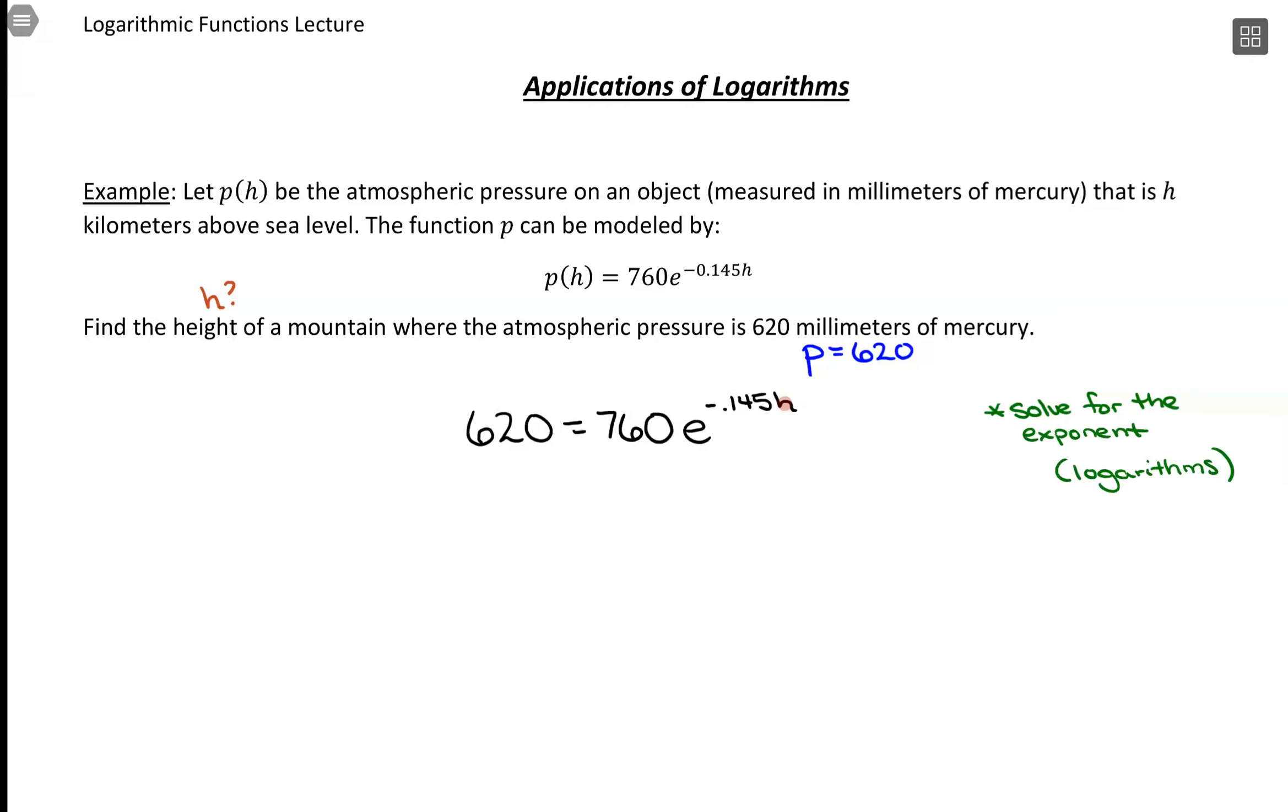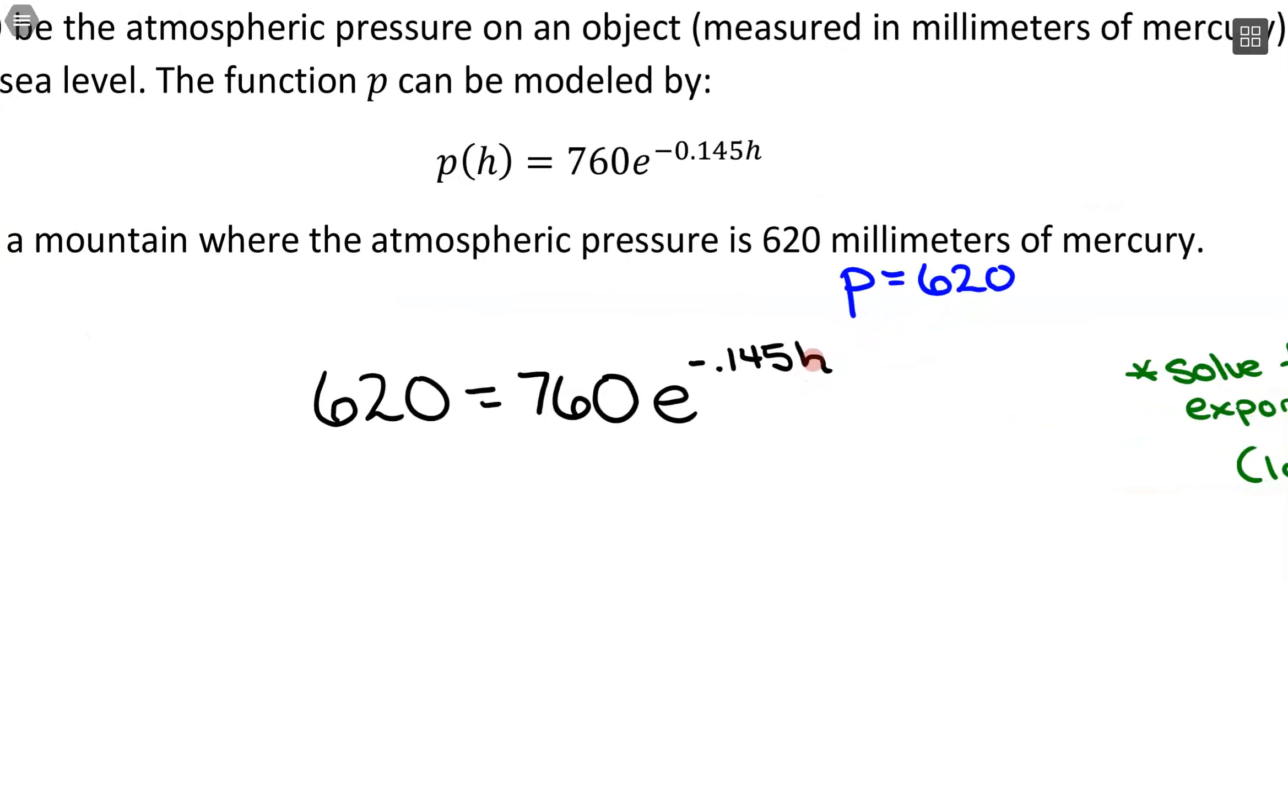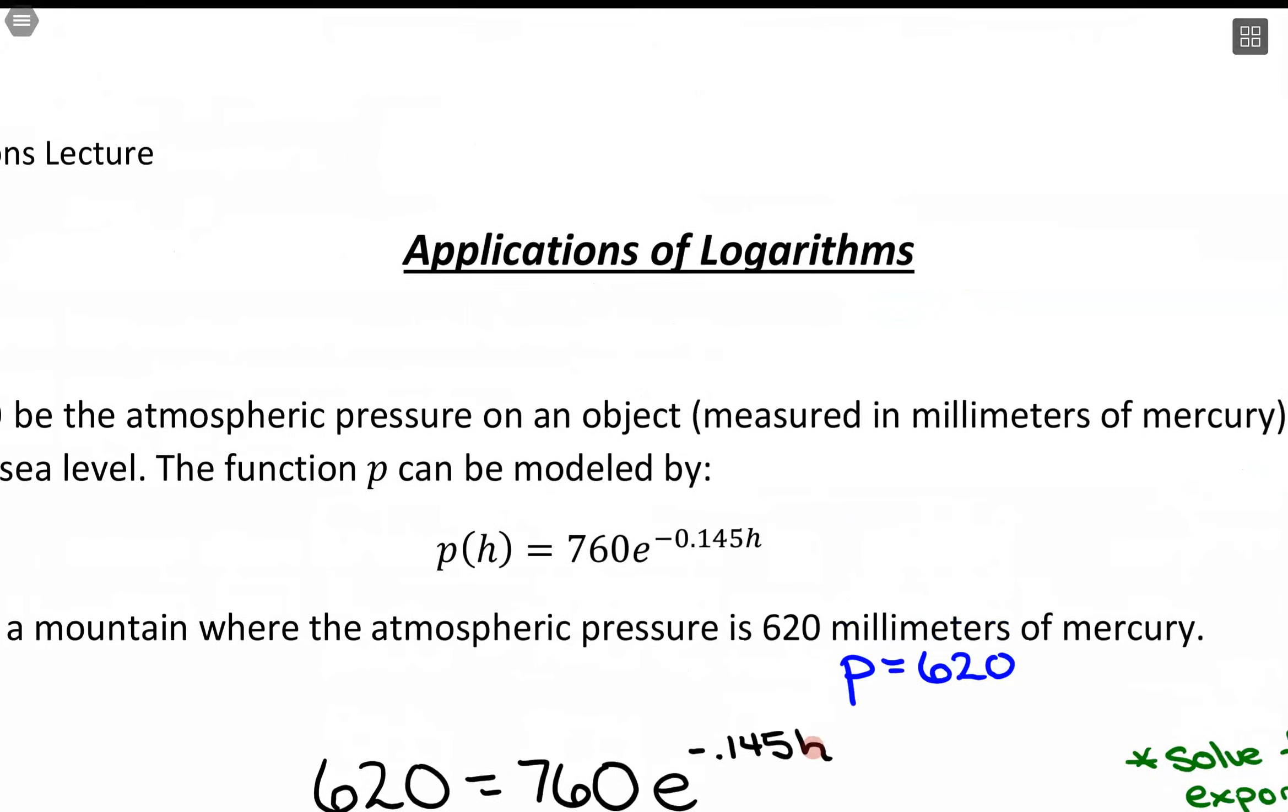Now with solving this using logarithms, I can see I have this value, I have this base e, I have this exponent, but I've got this extra stuff multiplying on the outside. And in order to switch from exponential and logarithmic form,